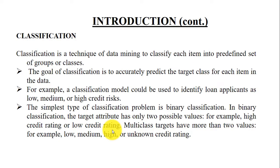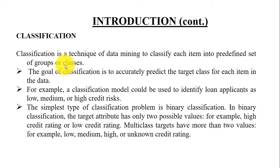After that, classification. Classification is a technique of data mining used to classify each item or instance into a predefined set or group of classes. Like in the case of sentiment analysis, we have two or three class labels — positive sentiment, negative sentiment, and neutral sentiment. Those positive, negative, and neutral are basically considered as the classes. The goal of classification is to accurately predict the target class for each item in the data, meaning we predict the target class for each review of a movie.